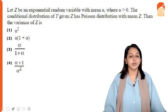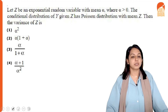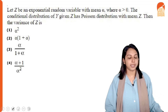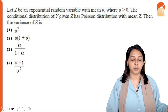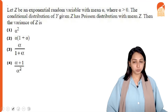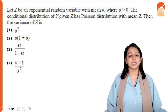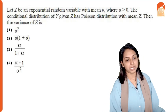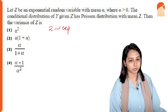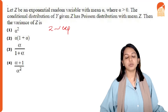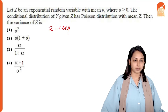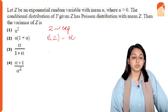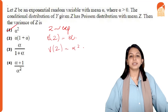Let Z be an exponential random variable with mean α, where α > 0. The conditional distribution of Y given Z is Poisson with mean Z. The question asks for Var(Z). Since Z follows an exponential distribution with mean α, we have E[Z] = α, and for an exponential distribution, Var(Z) = α². Option 1 is the right answer.